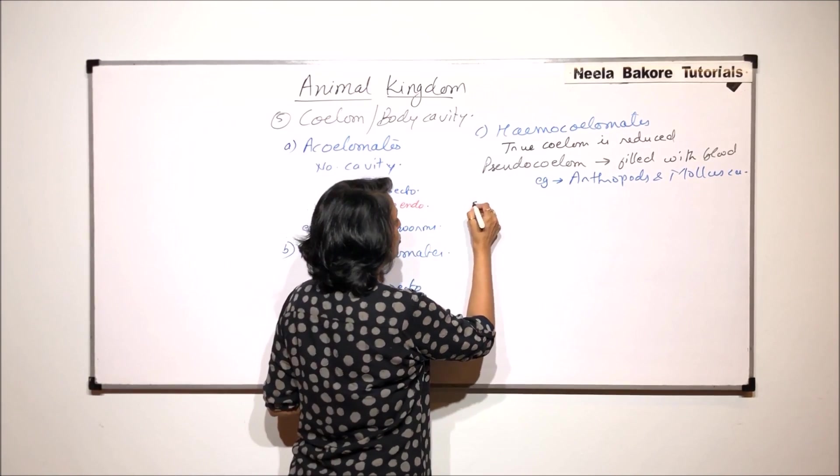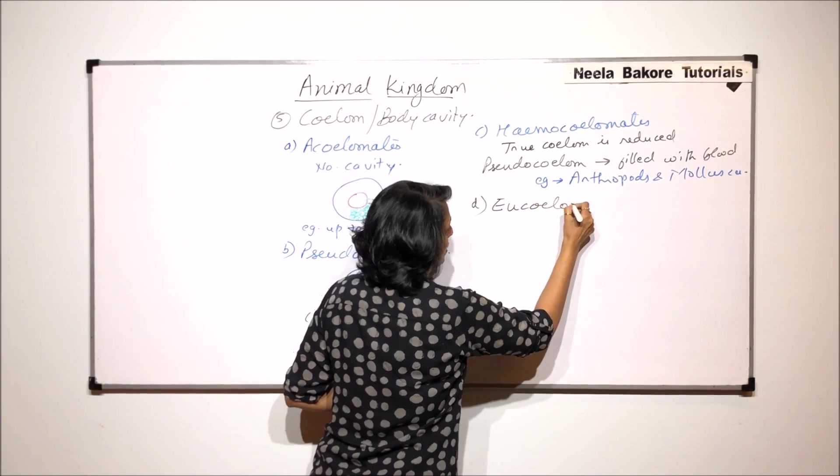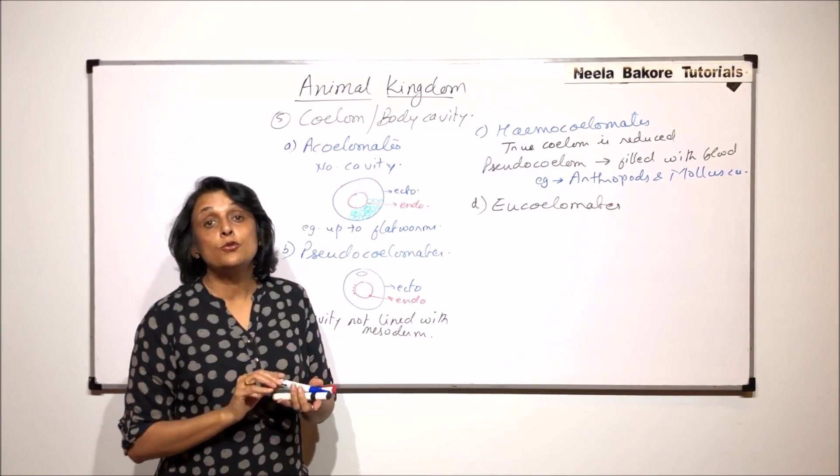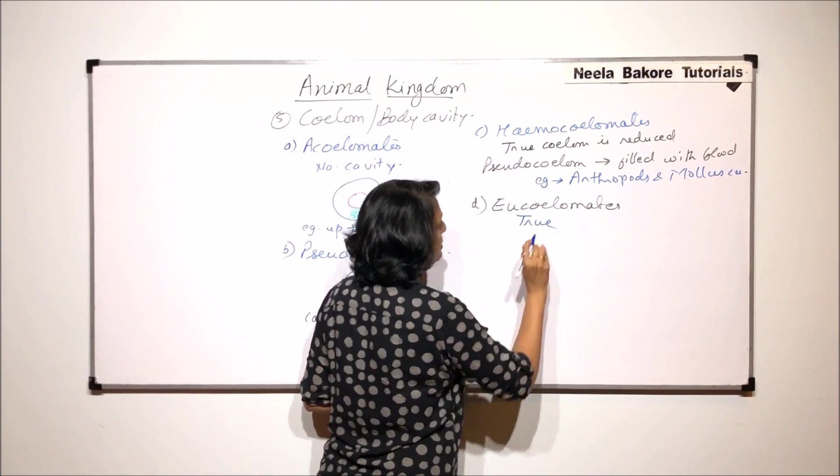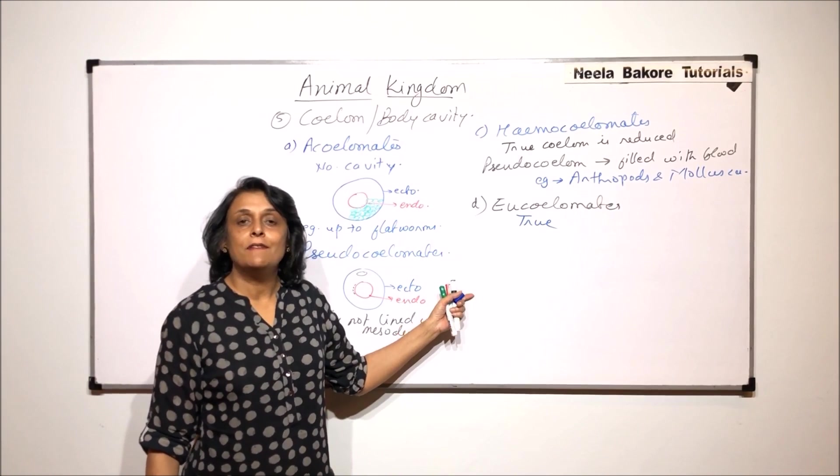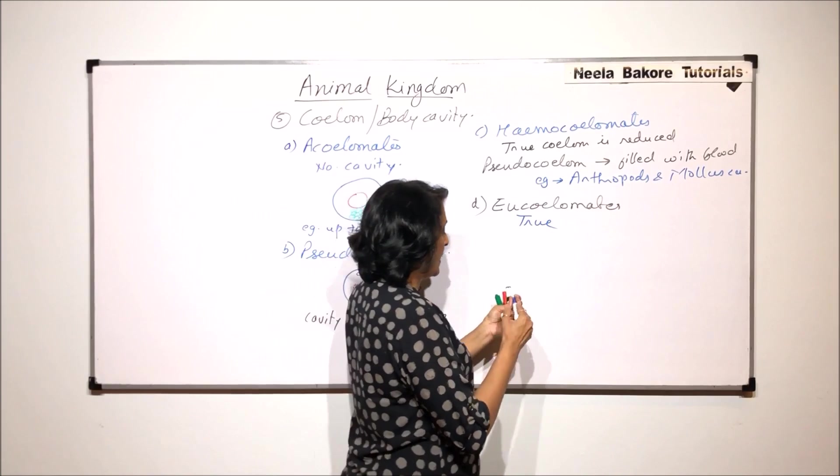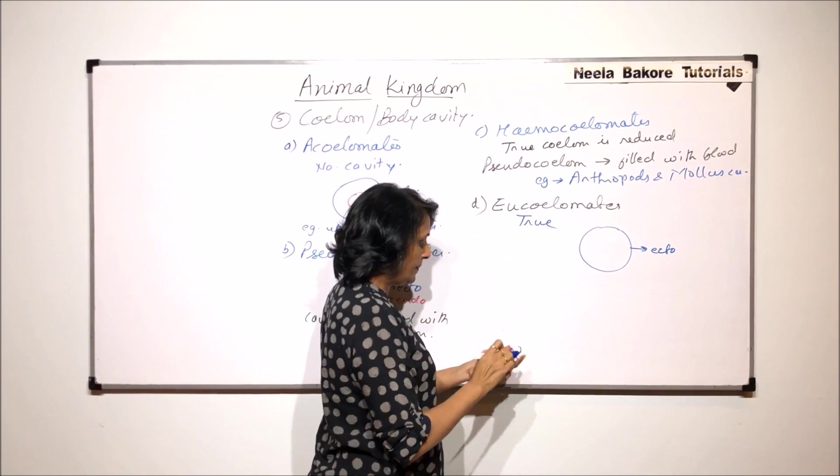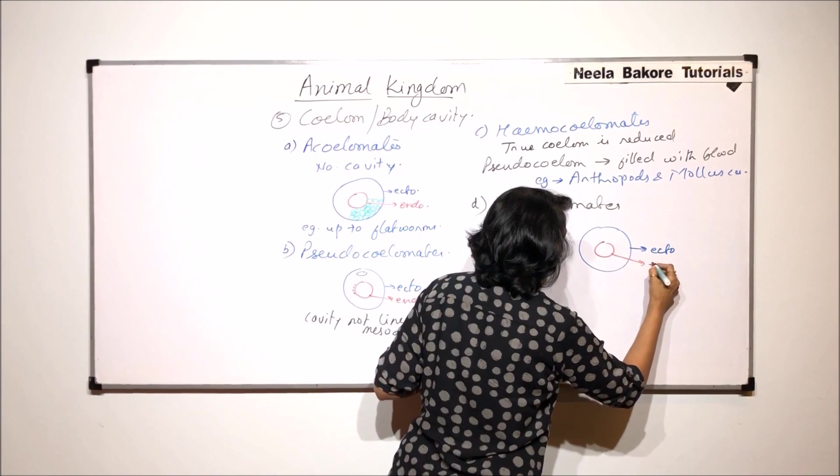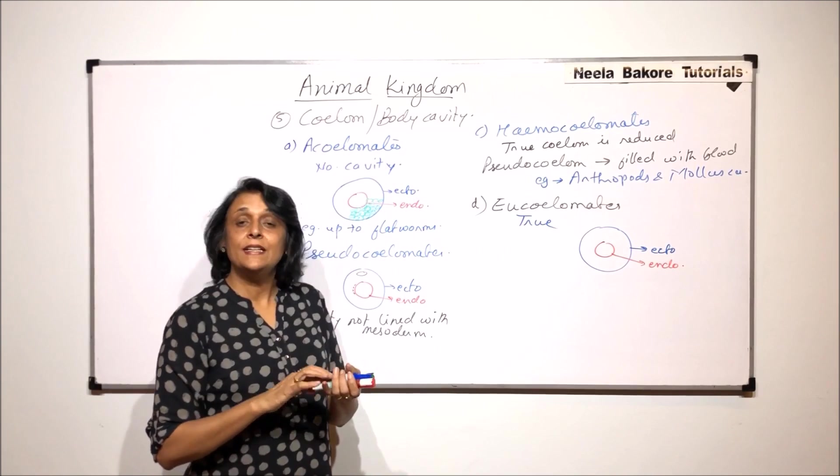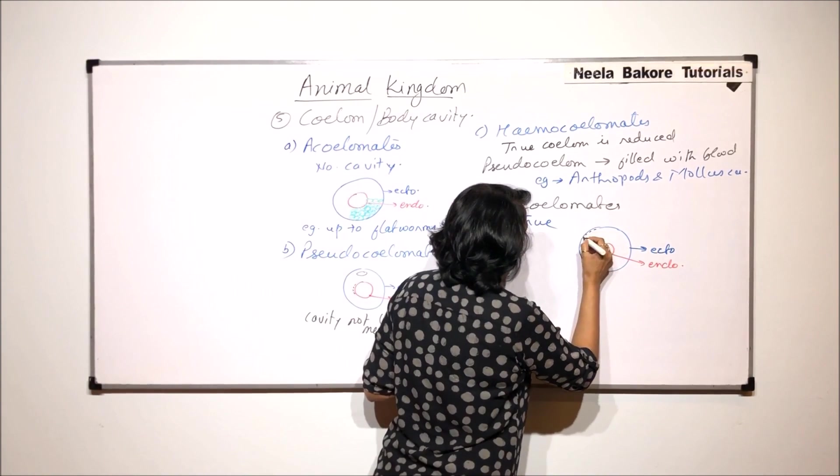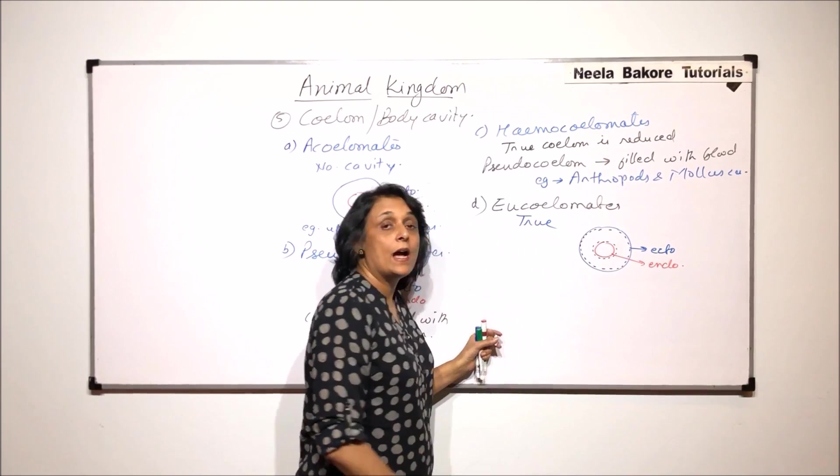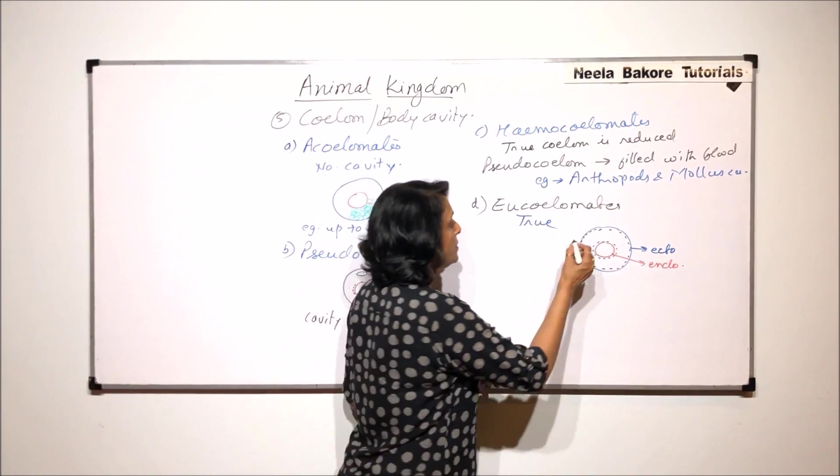Now, the fourth type, that is the true coelom, and this is known as eucoelomate. So these animals, they are called eucoelomate. They have true body cavity. Now, what exactly is meant by true body cavity? True body cavity means it is lined with mesoderm from all the sides. Again, if we draw the same structure, this line represents the ectoderm, digestive system, that is the alimentary canal, has endoderm. And now this cavity, cavity is lined with mesoderm. So here also there is a layer completely lining and here also. So this cavity now which has been lined with mesoderm from all the sides, this becomes the true coelom.